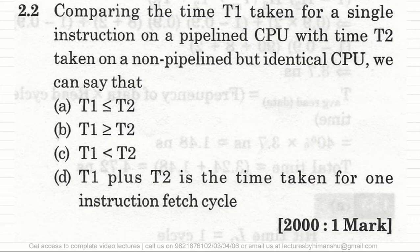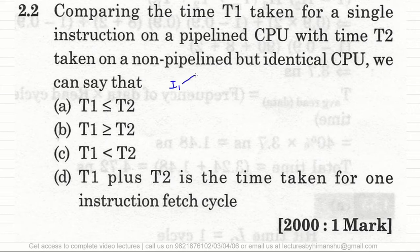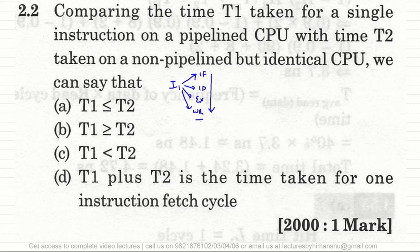First, you need to understand why we started pipelining. With a non-pipelined processor, a single instruction like i1 is divided into multiple phases: instruction fetch, instruction decode, execute, and write back. Without pipelining, all phases must complete one by one for a single instruction before the next instruction can execute.